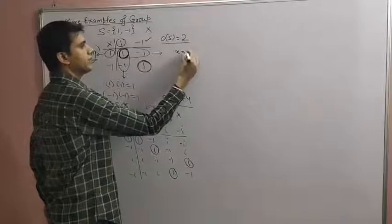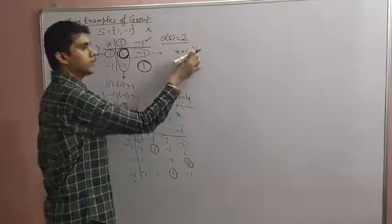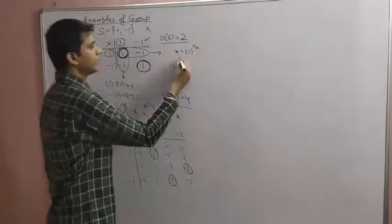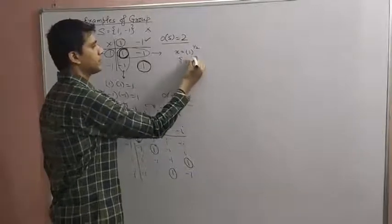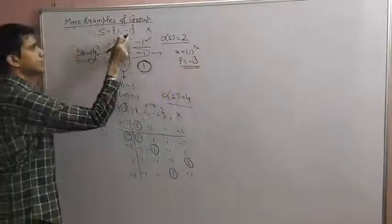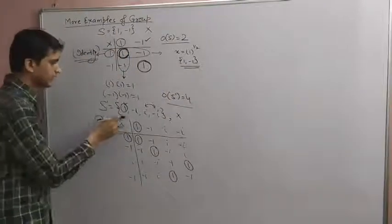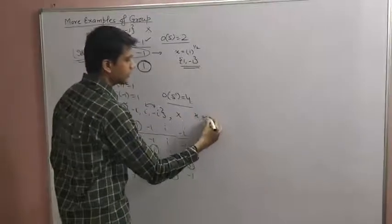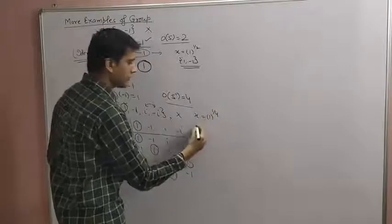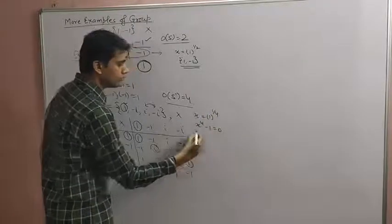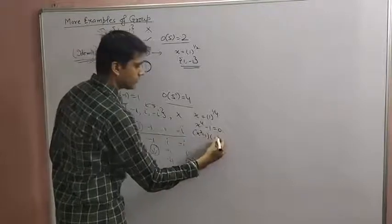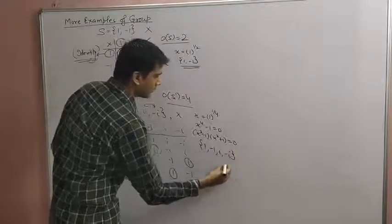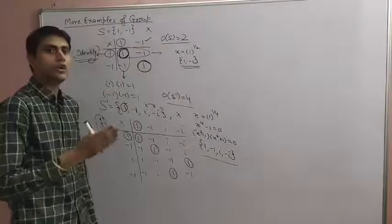Let us see what these sets represent. S = {1, -1} gives the values of x where x = 1^(1/2), i.e., the square roots of unity. S' = {1, -1, i, -i} gives the values of x = 1^(1/4), i.e., solving x⁴ - 1 = 0, which factors as (x²-1)(x²+1)=0 giving roots 1, -1, i, -i — the fourth roots of unity.